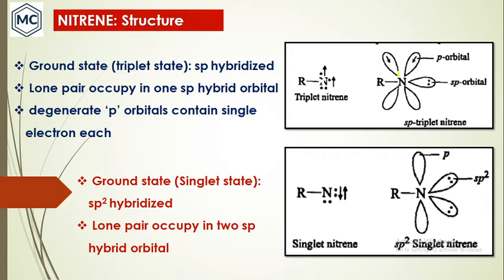Nitrene is sp-hybridized. In the ground state it is sp-hybridized: one lone pair occupies one sp hybrid orbital, and the second bond pair is used for making the R–N bond. In the sp-hybridized state there are two degenerate p orbitals (2p), and a single electron occupies each of these degenerate p orbitals — that is the structure of triplet nitrene.